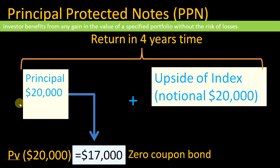To protect the principal, we can use a zero coupon bond. When you purchase a zero coupon bond, at maturity you receive the notional back. If we assume there is a zero coupon bond that will give us $20,000 at the end of four years, and the present value of that bond today is $17,000, then if we purchase this zero coupon bond for $17,000 and hold it to maturity, irrespective of what happens in the market, we will still receive $20,000 at maturity.